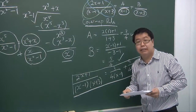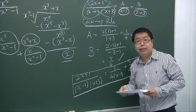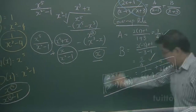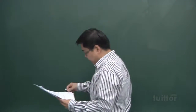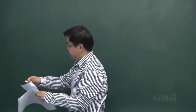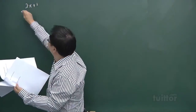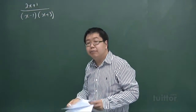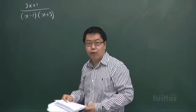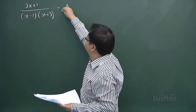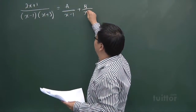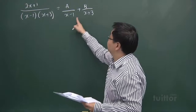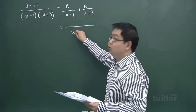The second and third methods are two approaches that are very familiar to everyone. For the second method, we use the same example: 2x plus 1 over (x minus 1)(x plus 3). This method is called comparison of coefficients. As usual, we first break it into partial fractions A over (x minus 1) plus B over (x plus 3), with the aim of finding A and B.